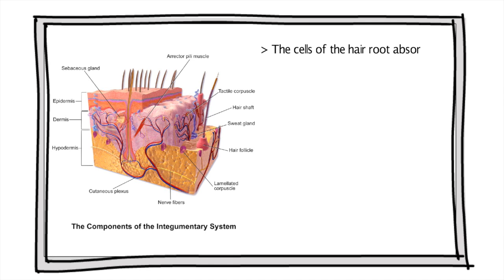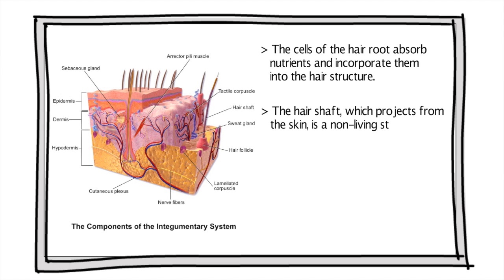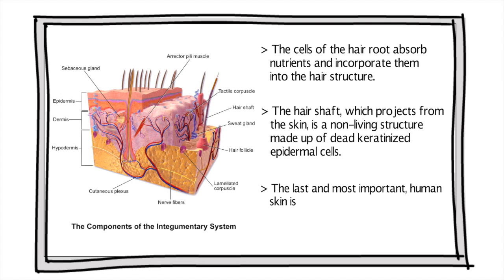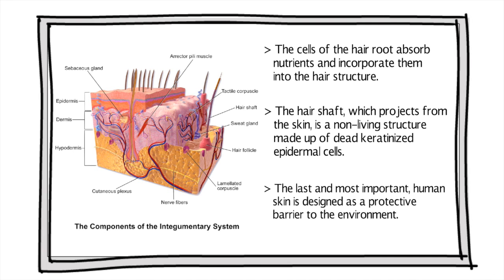The cells of the hair root absorb nutrients and incorporate them into the hair structure. The hair shaft which projects from the skin is a non-living structure made up of dead keratinized epidermal cells. Most importantly, human skin is designed as a protective barrier to the environment.